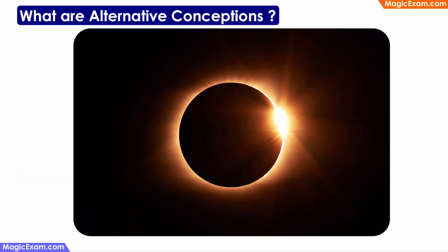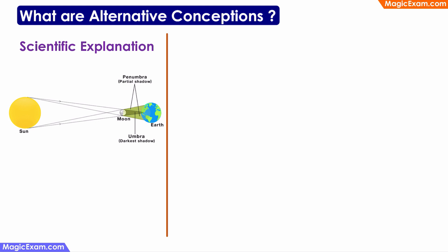So what are these alternative conceptions? You can see one image on the screen — this is a solar eclipse. There is a scientific explanation: when the moon comes between the earth and the sun, the shadow of the moon falls on the earth, and that is visible to us as a solar eclipse, or we can say the moon is blocking the sun causing the solar eclipse.